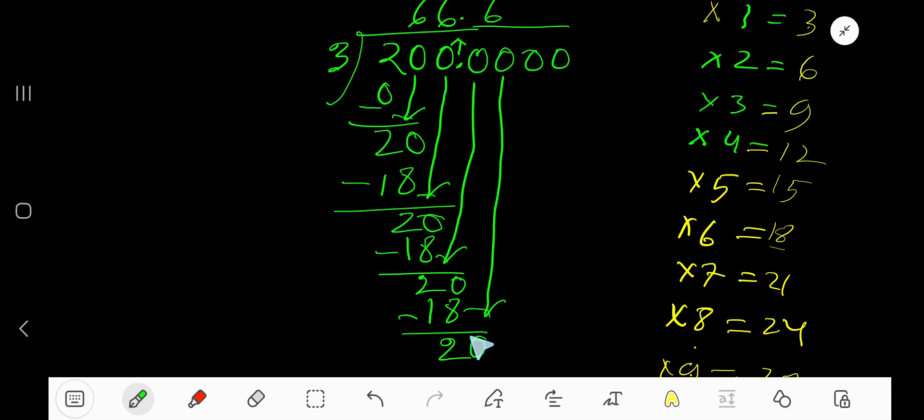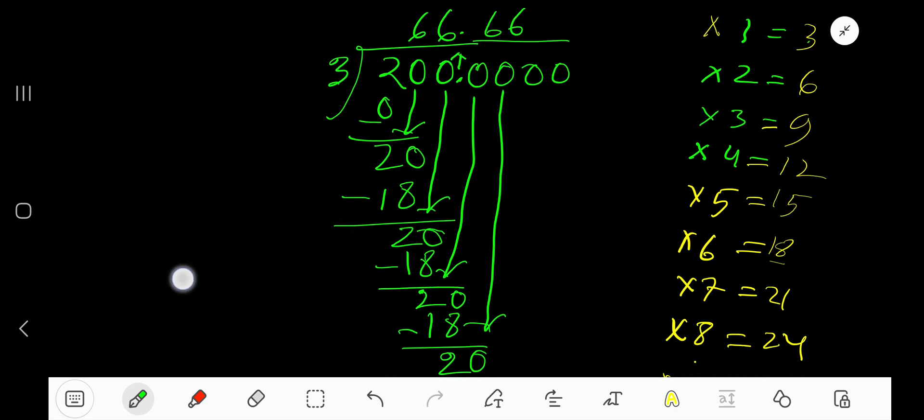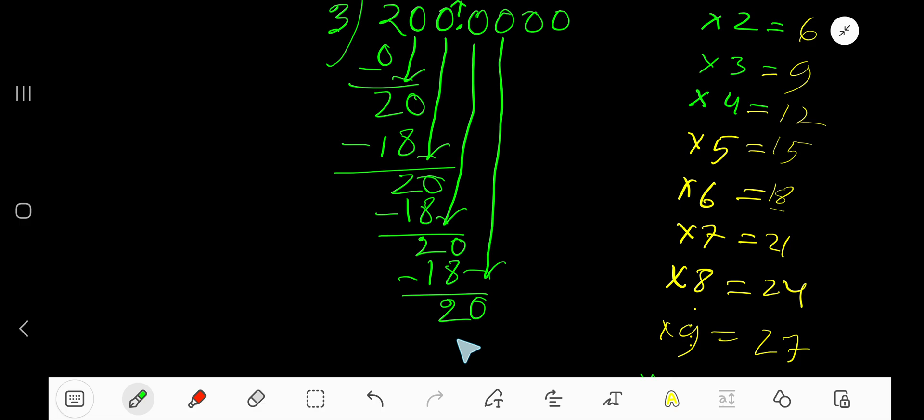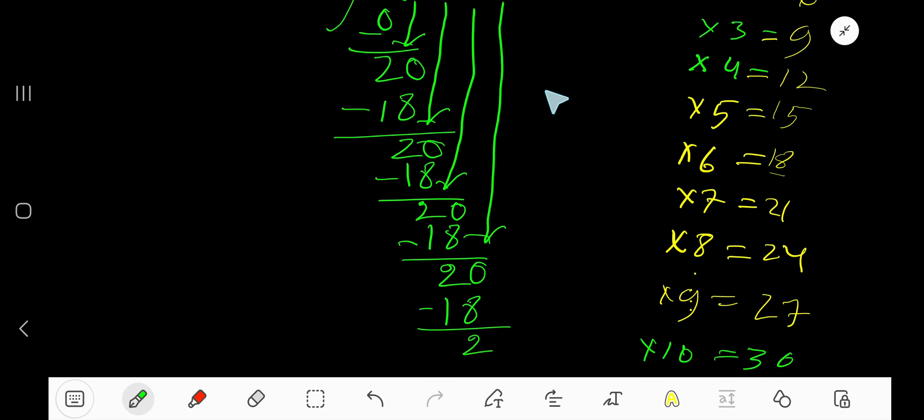Now 3 goes into 20 how many times? Again 6 times. 6 times 3 is 18. Subtract. You can bring down another 0.